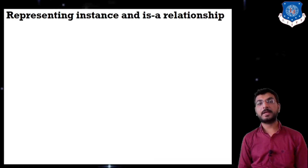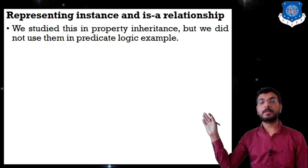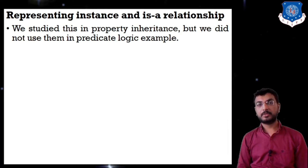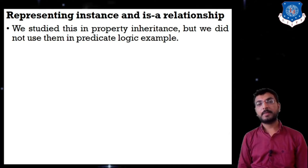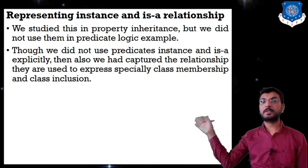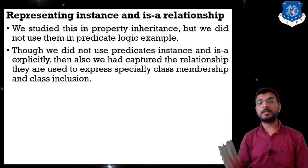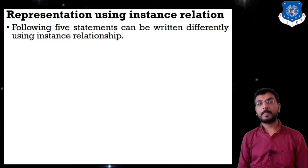We had studied instance and ISA relationships in the topic of property inheritance, under knowledge representation approaches. The second technique was inheritable knowledge, which we covered in the previous session. In instance and ISA relationships, we did not use predicate logic explicitly, but we captured the relationships. Instance relationship is called class membership and ISA relationship is called class inclusion.